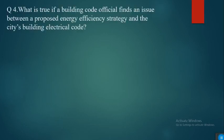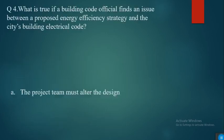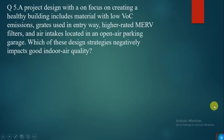Question four: what is true if a building code official finds an issue between a proposed energy efficiency strategy and the city's building electrical code? The options are: a LEED reviewer must approve the existing strategy; the project administrator should rerun the energy model; the electrical contractor can proceed with the design; or the project team must alter the design. The answer is the project team must alter the design.